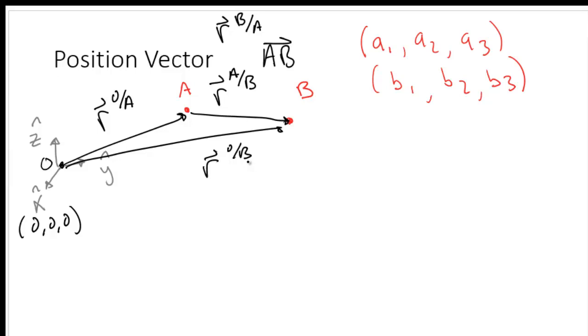Remember with vector addition, if we add them head to tail - if we add the vector O to A head to tail with the vector A to B, we would get the position vector R O to B. So R O to B equals R O to A plus R A to B. Now I'm going to write down R O A and R O B.